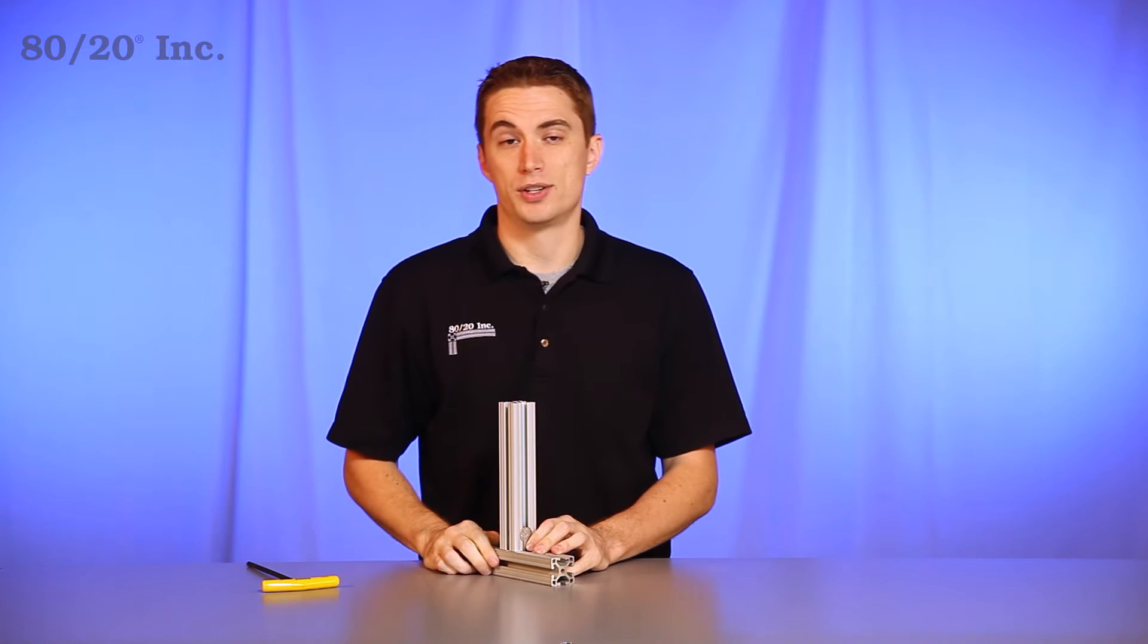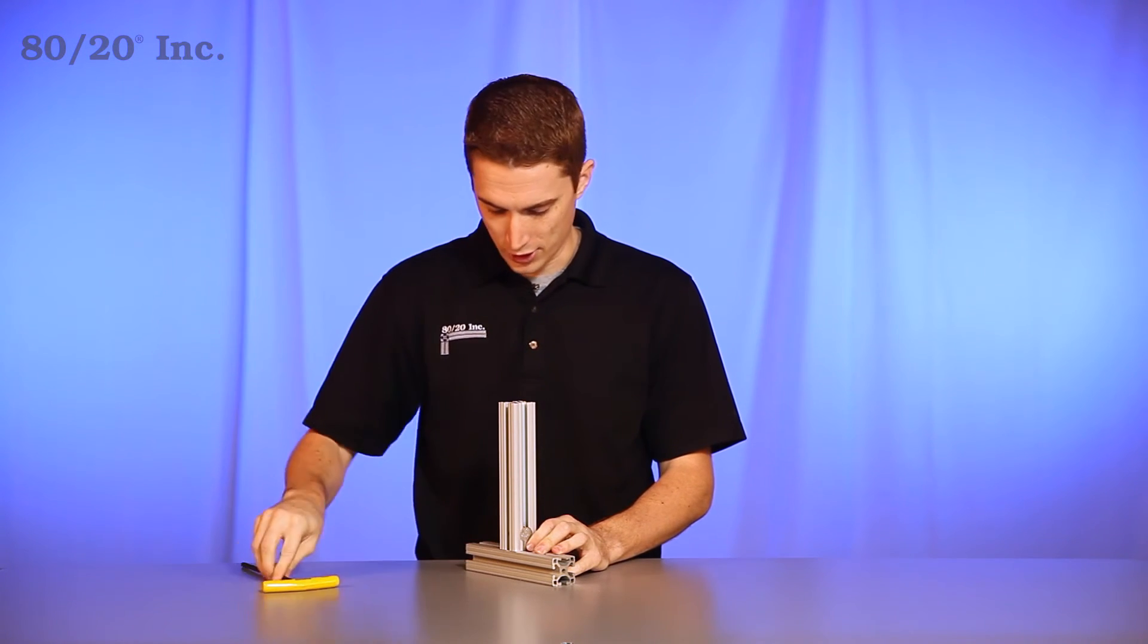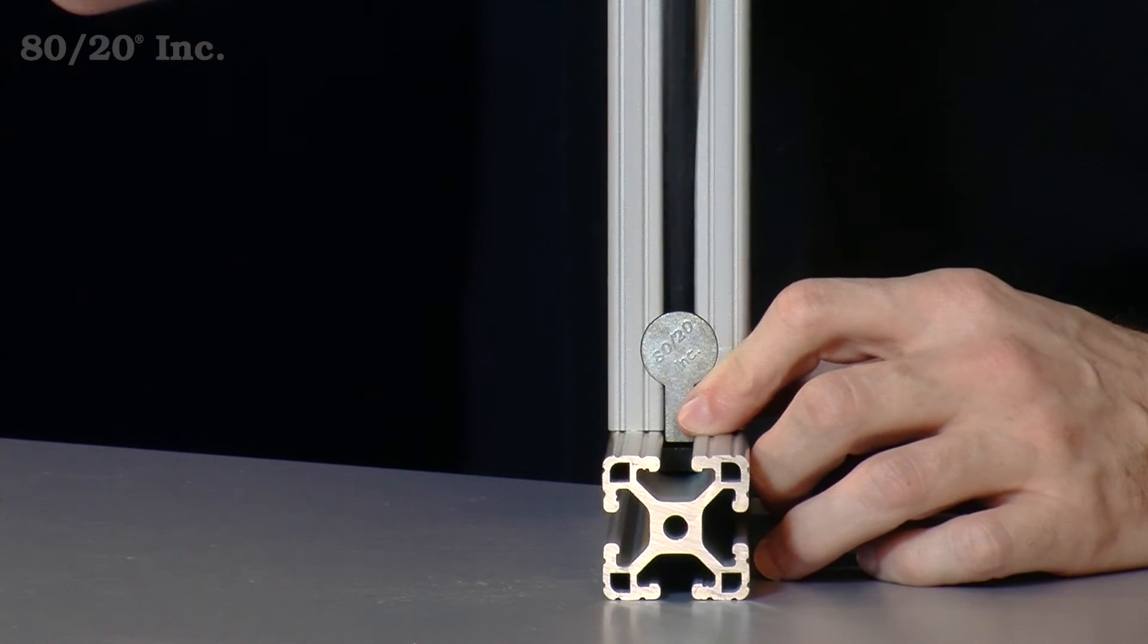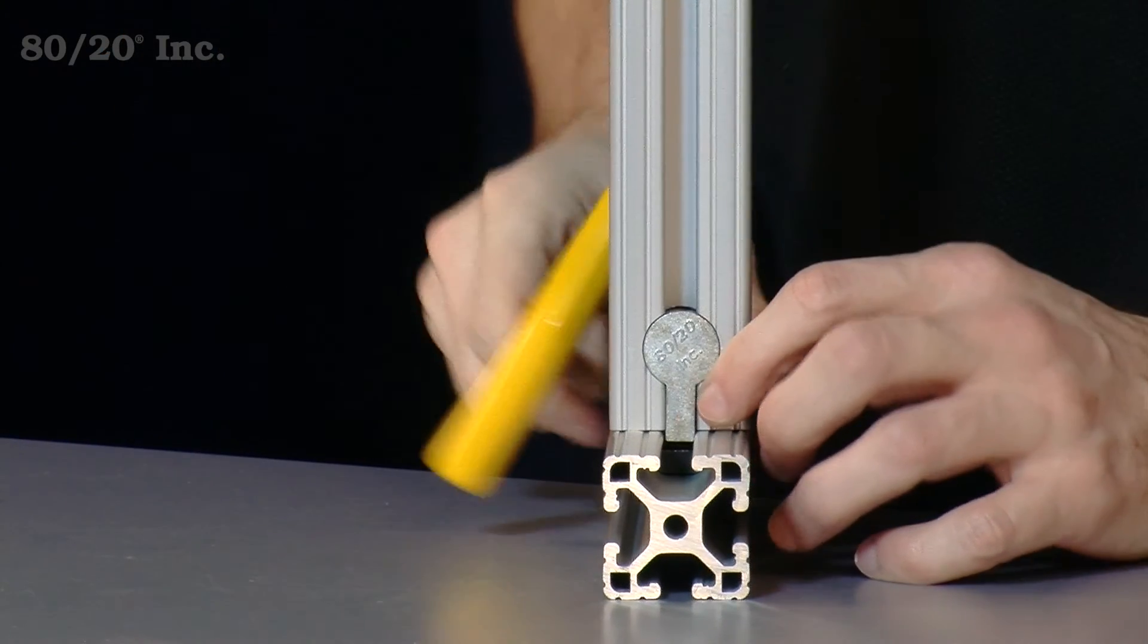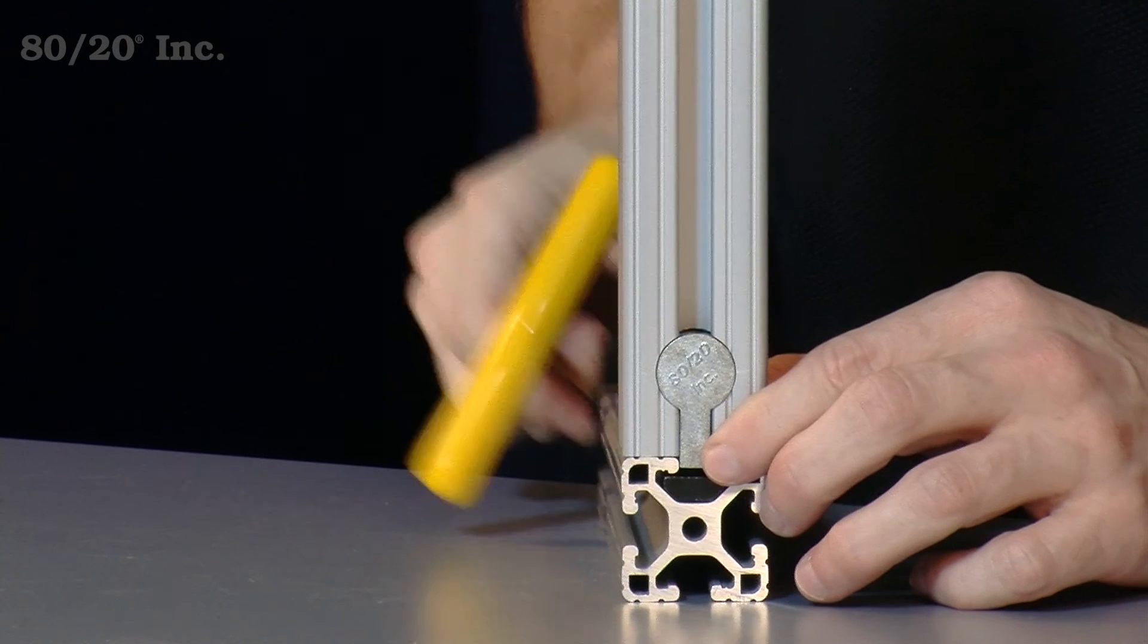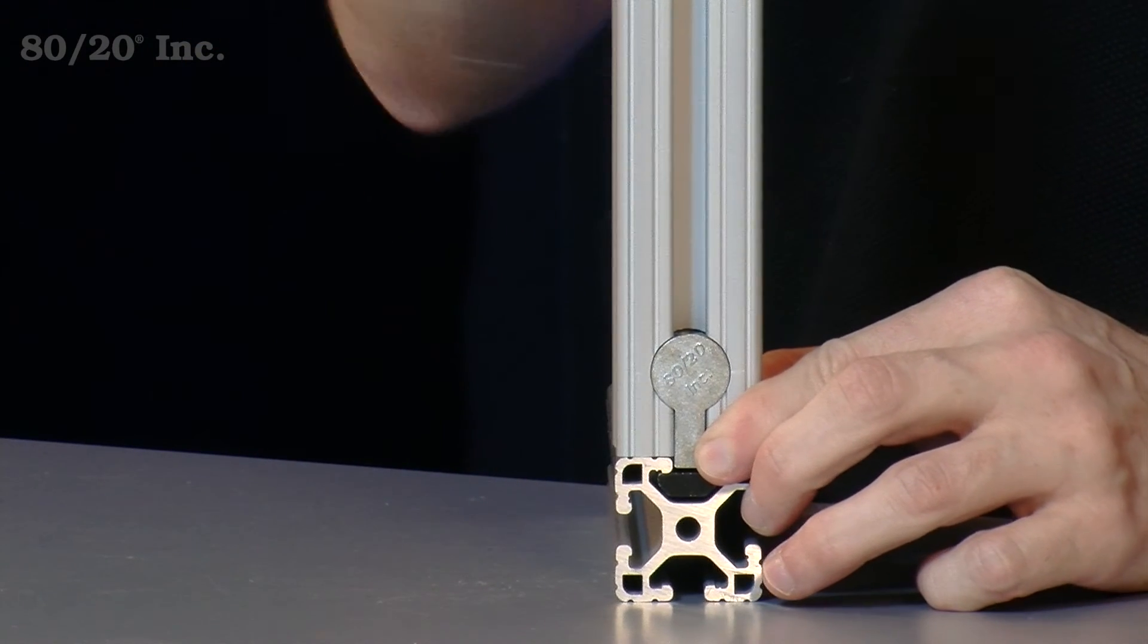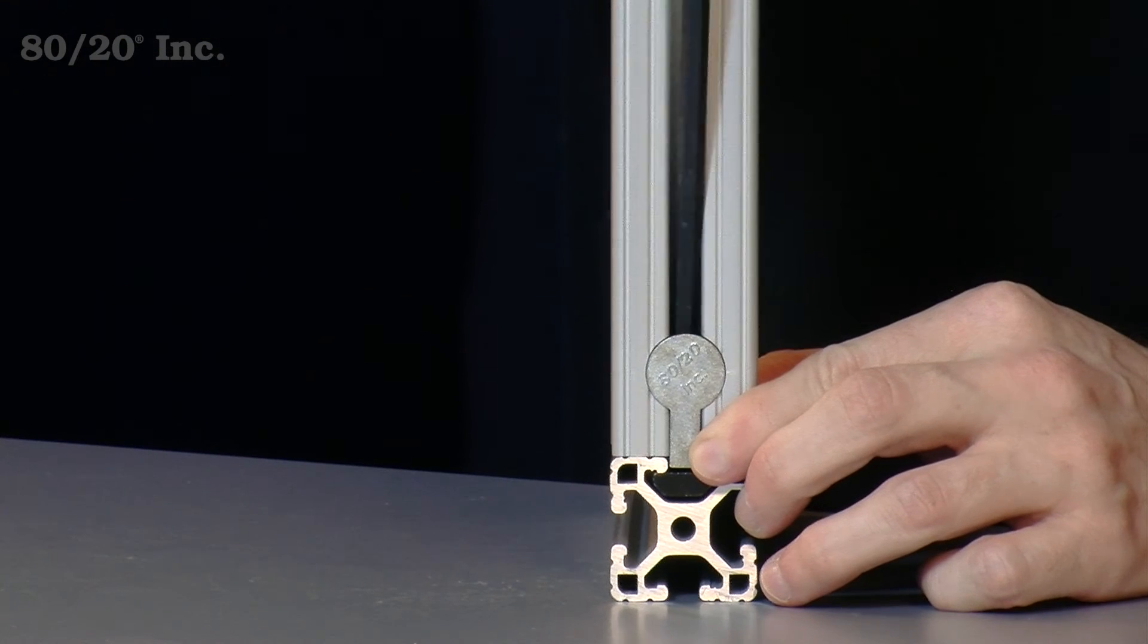Now the great thing about the double anchor fastener is its adjustability. If you need a new location on the bar, simply loosen up the double anchor fastener and slide it anywhere along the bar. Once you've found your new location, tighten down and you're good to go.